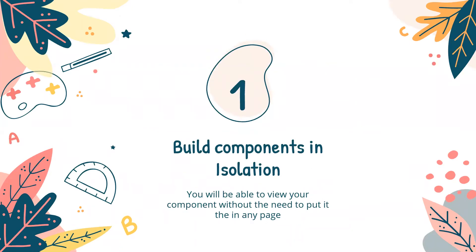For building components in isolation — let's say you're creating your React app, but you don't have the page where you're going to use your component yet. Storybook allows you to test, view, and check everything in isolation without putting it inside the working application.